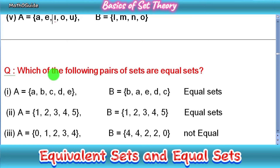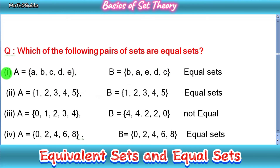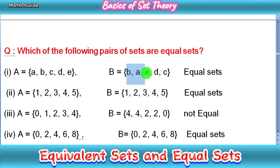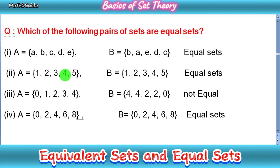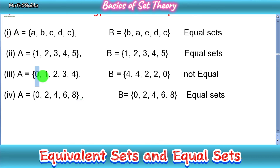Now we have a second question: which of the following pairs of sets are equal? In part one, set A is {a, b, c, d, e} and set B is {b, a, e, d, c}. Both have five elements and exactly the same elements — just in different order — so these are equal sets. In part two, set A is {1, 2, 3, 4, 5} and set B is {1, 2, 3, 4, 5}, so these are equal sets.